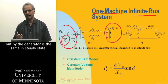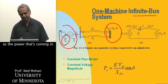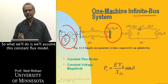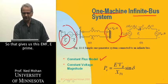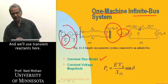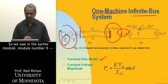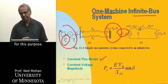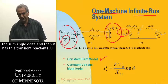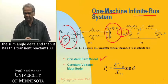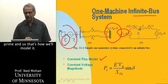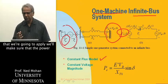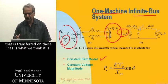To model the generator for this study, we use a constant flux model, giving an EMF E' with transient reactance X'T — as discussed in module eight. We model it as this back EMF E' at angle delta, in series with transient reactance X'T. In steady state, prior to the fault, we ensure that the power being transferred on these lines is correct by modeling it with synchronous reactance and the back EMF. We also assume the study duration is short enough that the exciter doesn't have time to change the EMF, so E' is constant in magnitude, though the angle delta will oscillate.